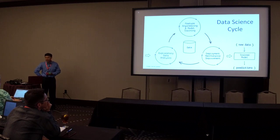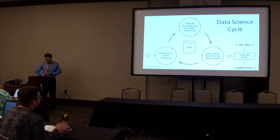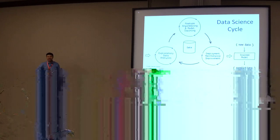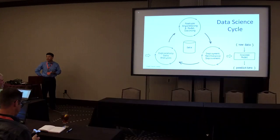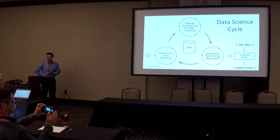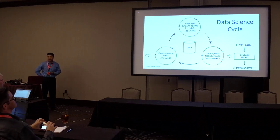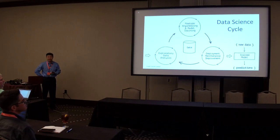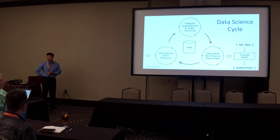Since half of us are data scientists, we're familiar with the data science cycle: getting some data, building a model, iterating, figuring out it's good enough, putting it in deployment. Once you deploy it, make sure you monitor it, because model drift is something everyone should be very cognizant of — especially if you put a model in production over the long term, you can guarantee there will be model drift.